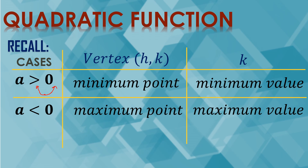The value of k, the y-coordinate of the vertex, will become the minimum value. However, when a is less than 0 and the graph opens downward, the vertex becomes the maximum point or the highest point, and the value of k is the maximum value.